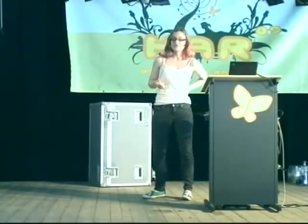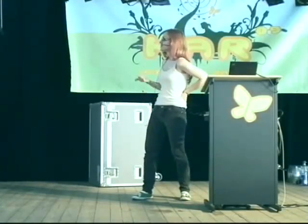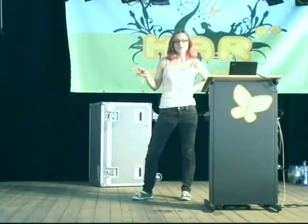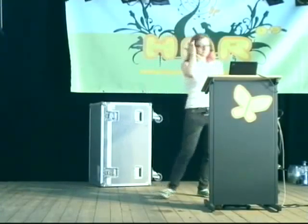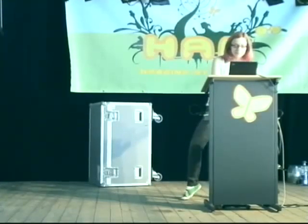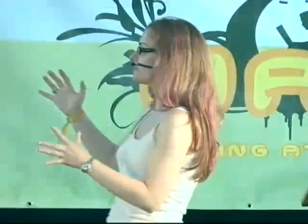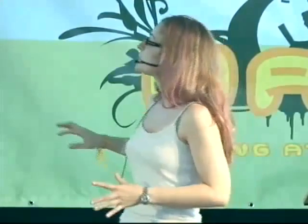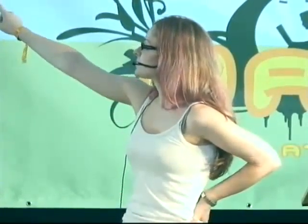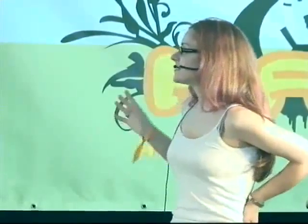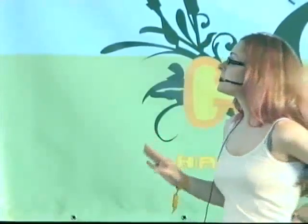So now you have an equation for the velocity of the particle in terms of the charge, the magnetic field, whatever its given radius is, and the mass — and those are all known. Velocity is in the numerator on the left side, radius is in the numerator on the right side, and Q, B, and M are all fixed quantities. So if you increase the velocity, the radius is going to increase.